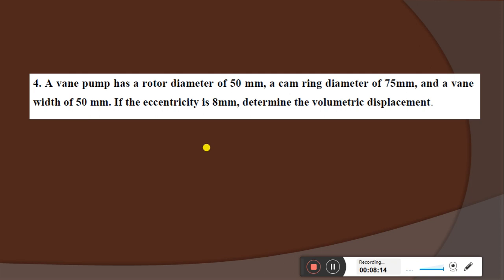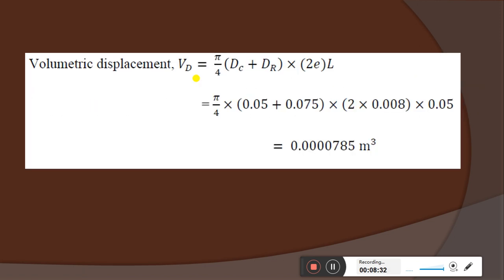One more problem: a vane pump has a rotor diameter of 50 mm, a cam ring diameter of 75 mm, and a vane width of D mm. If the eccentricity is 8 mm, determine the volumetric displacement. Use the same equation: VP = (π/2) × (dc + dr) × e × L. Substitute the values — all in meters — to find the volumetric displacement in m³ per revolution.